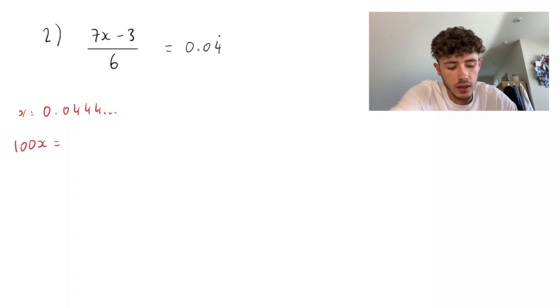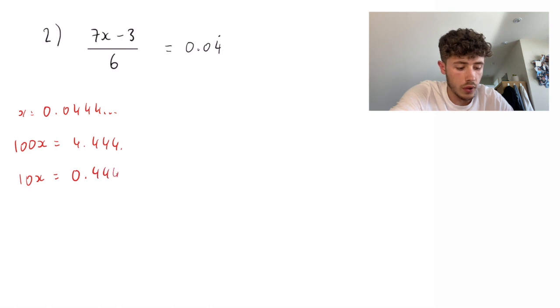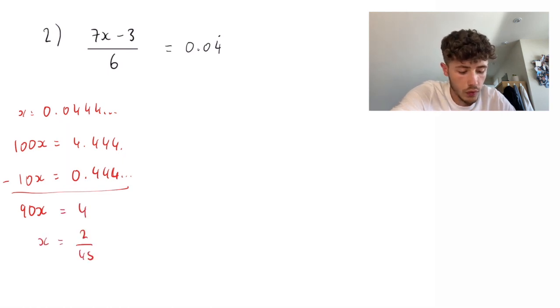100x is going to equal 4.44 and so on. And 10x is going to equal 0.4 and so on. So, if we take those two away from each other, we're going to have 90x is equal to 4. So, x equals 2 over 45.